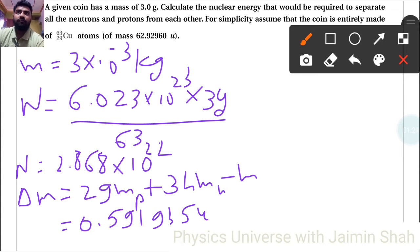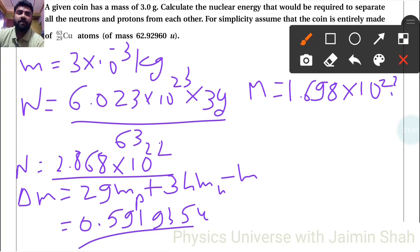So see, total mass is, this we have to multiply with this, so capital M equals 1.698×10^22 amu. So that is that value, that mass.